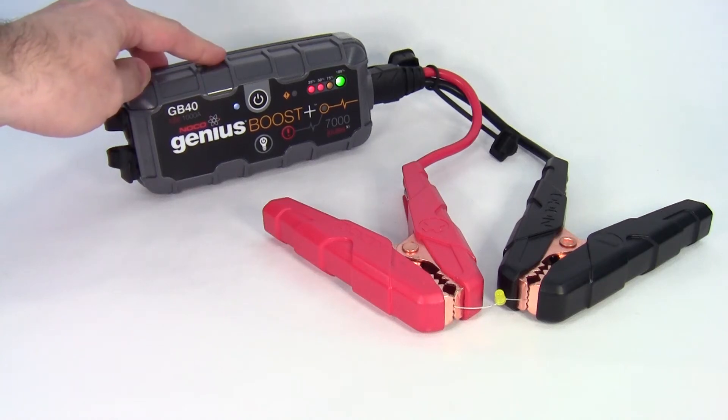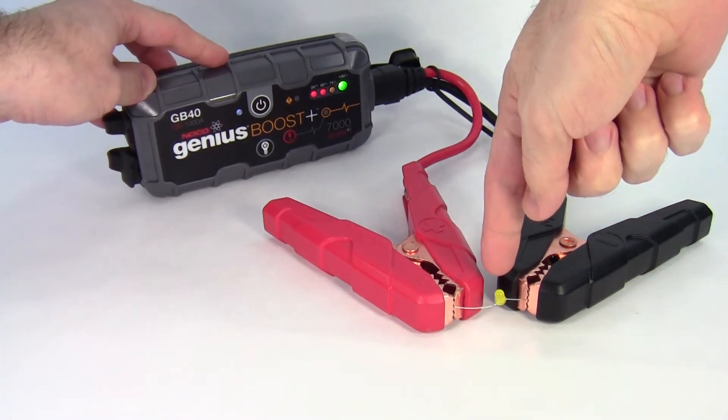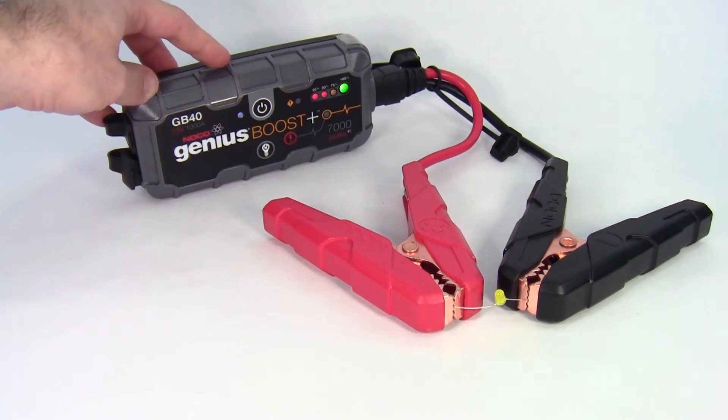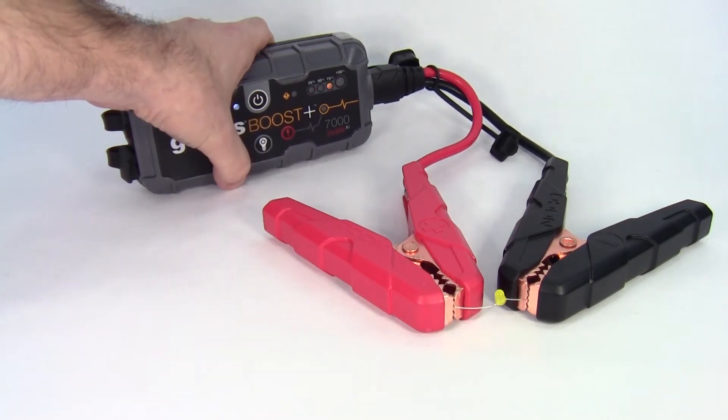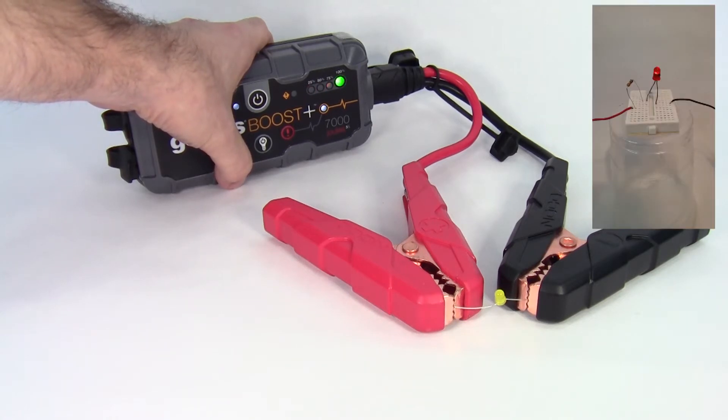What happens if I connect this 12-volt car battery jumper directly to this tiny LED with no current limiting resistor? It looks like nothing happened. That might be disappointing, but I promise there are explosions later in this video.